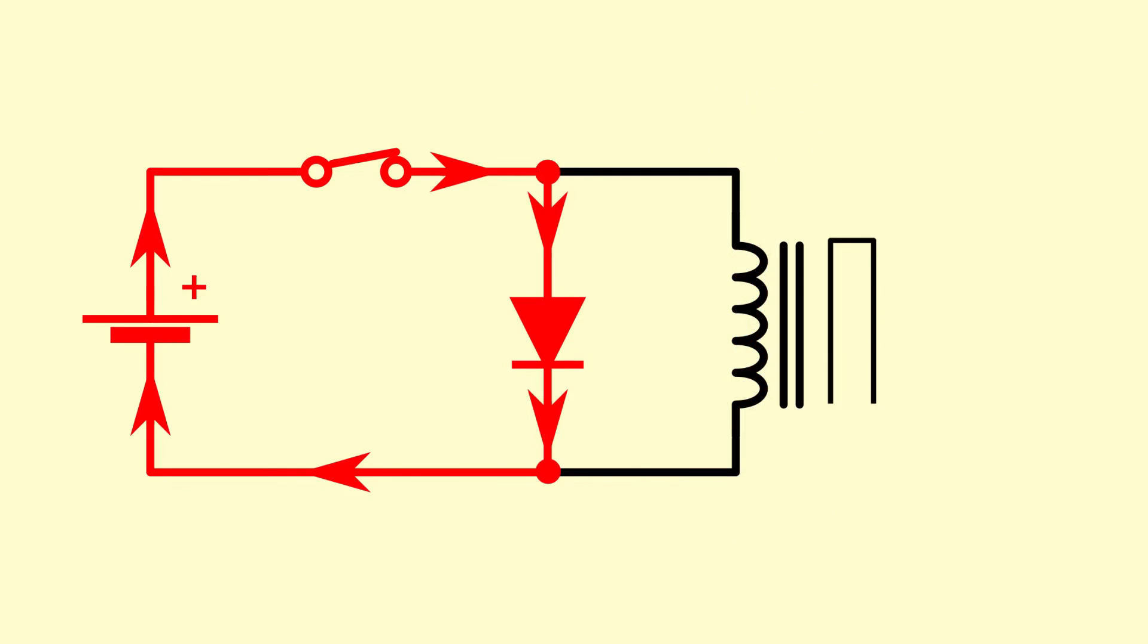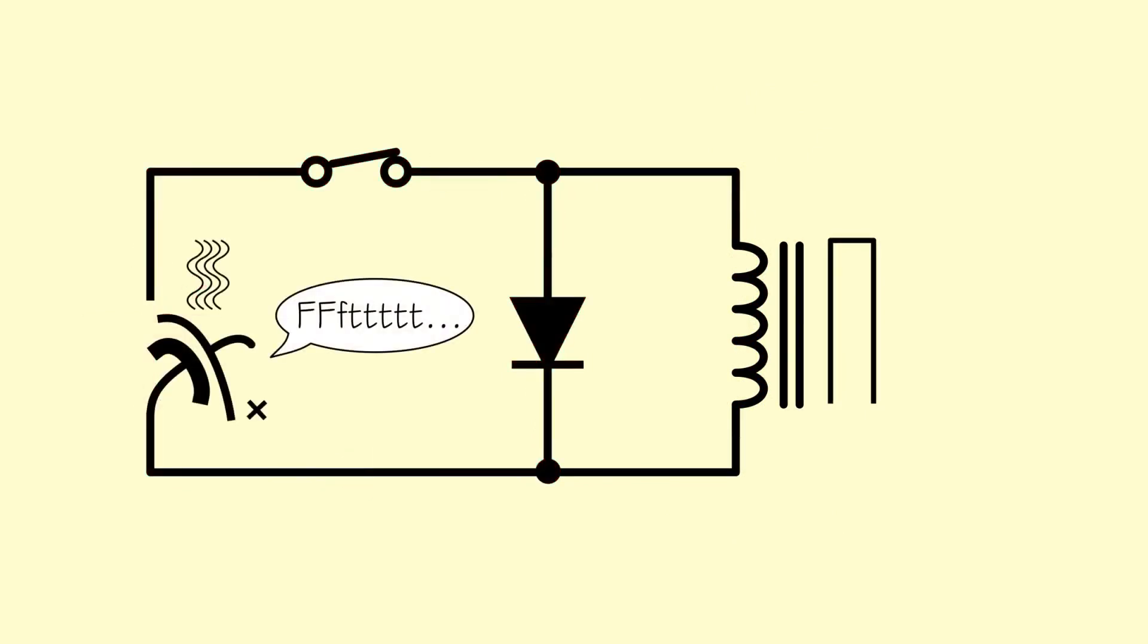If however you connect the diode the wrong way around, the power supply is short-circuited and it will not end well. So that's Snubber Diodes. Thanks for watching.